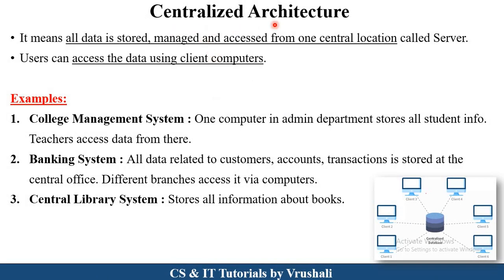The first topic is centralized architecture. As the name suggests, all the data is stored centrally at one location, which is called the server. There are three components of centralized architecture: first, the server, which is also called the centralized database; second, multiple clients connected to the same database; and third, a network connecting all of them. All client computers store, manage, and access data from this central server.